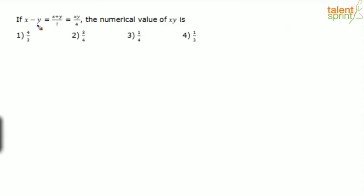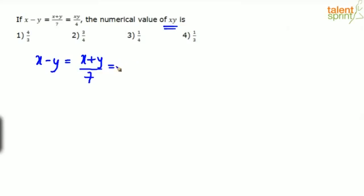The question is: x minus y equals (x plus y)/7 equals xy/4, and we have to find the numerical value of xy. Trying to substitute values of x and y directly to satisfy these conditions is going to be very complex.